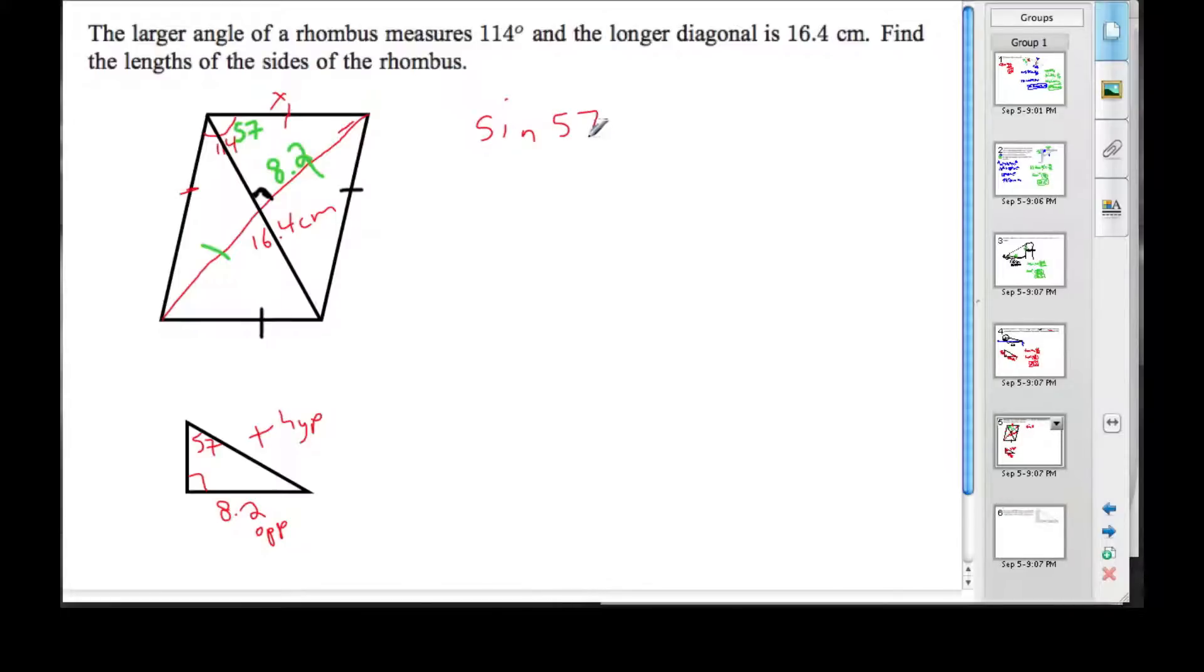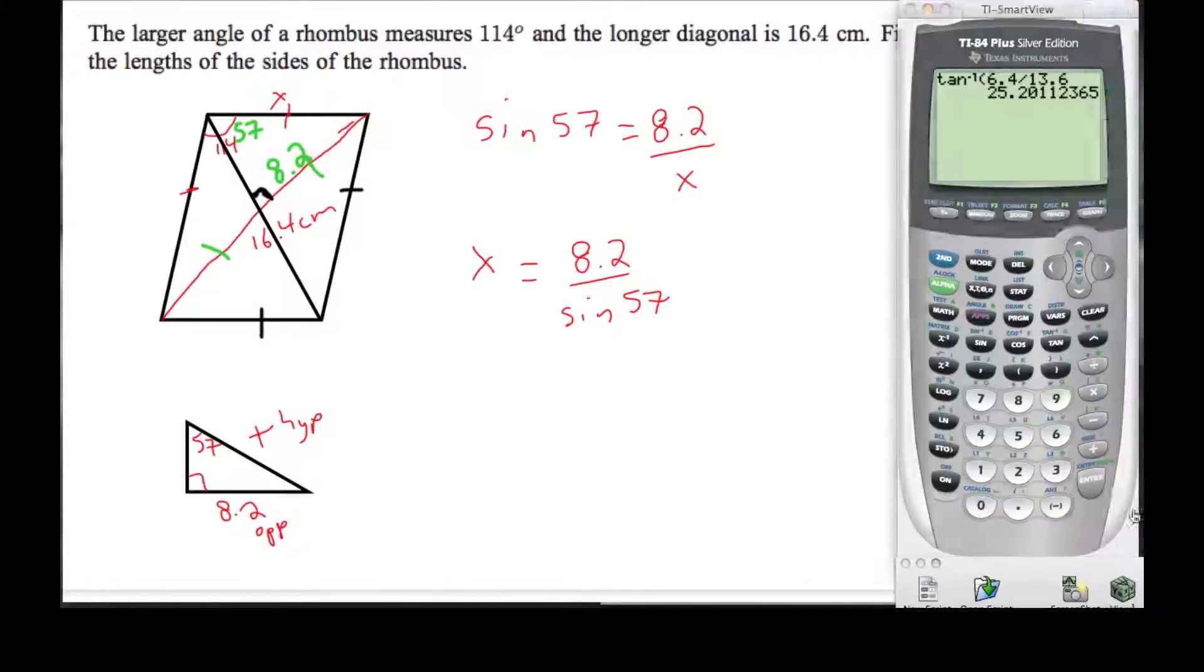A little bit of algebra, we can divide both sides by the sine of 57, multiply both sides by x. And then at this point our calculator can do the rest. So 8.2 divided by sine 57, and that gives us 9.777.